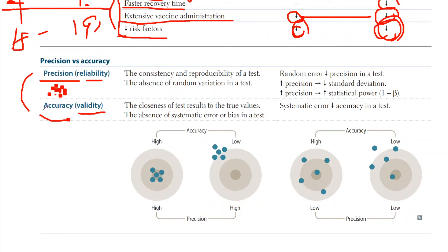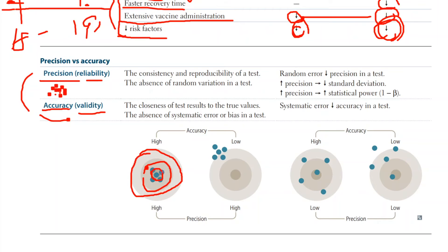Precision means that your data points are very closely aligned — very close to each other. Accuracy means that whatever you're testing is actually close to what it's supposed to be testing. In the archery example, notice how all the points are close to each other — so it is highly precise — and they're also going to the inner circle of the board, so it is both highly precise and highly accurate.